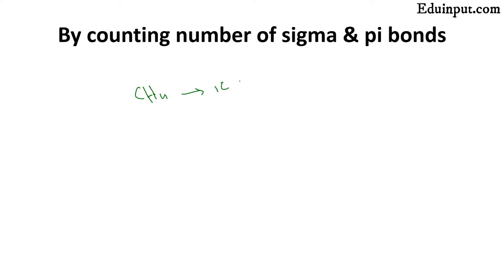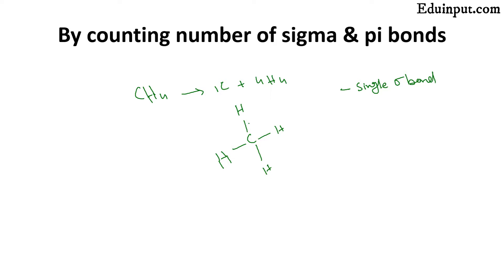We have one carbon atom and four hydrogen atoms. Carbon, being the central atom, can make four bonds. We know hydrogen only forms single bonds. So in methane we just need to count the number of sigma bonds. A single bond is always a sigma bond. Counting: one, two, three, and four — there are four sigma bonds. Whenever all bonds are sigma or single bonds, the hybridization will be sp3.